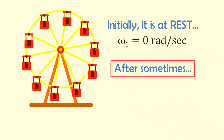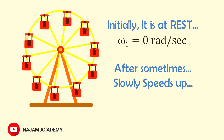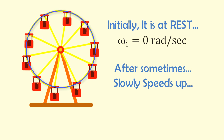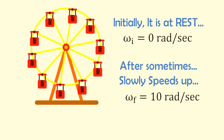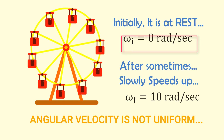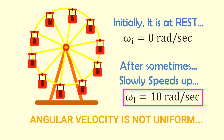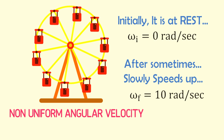After some time, the ferris wheel starts rotating and slowly speeds up its rotation. The angular velocity of the ferris wheel reaches a final value, omega f, equal to 10 radians per second. Thus, the angular velocity of the ferris wheel is not uniform because it changed from 0 to 10 radians per second — the ferris wheel possesses non-uniform angular velocity.